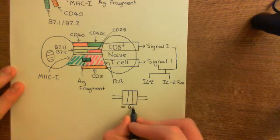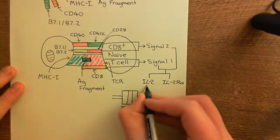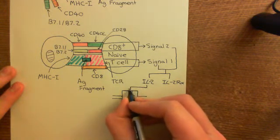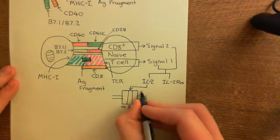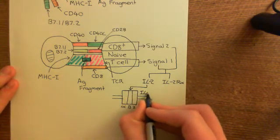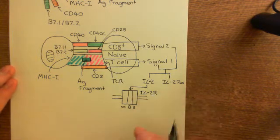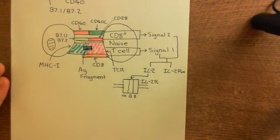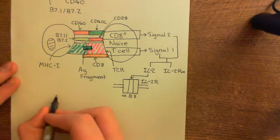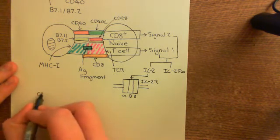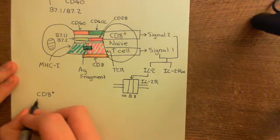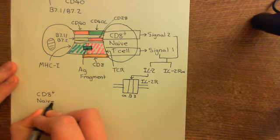Here is the now complete interleukin-2 receptor in the membrane of the CD8-positive naive T-cell — the alpha, the beta, and the gamma. The interleukin-2 will then be secreted from the naive CD8-positive T-cell and will act on this complete interleukin-2 receptor on the surface of the T-cells, triggering differentiation of the CD8-positive naive T-cell into a cytotoxic T-cell. Once the interleukin-2 acts on the complete receptor, it triggers differentiation and then proliferation.